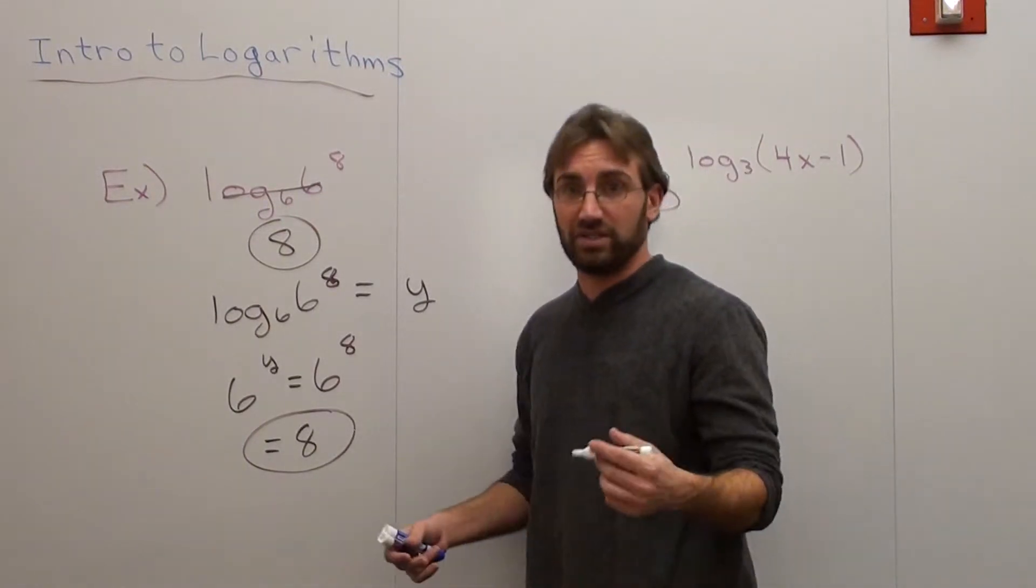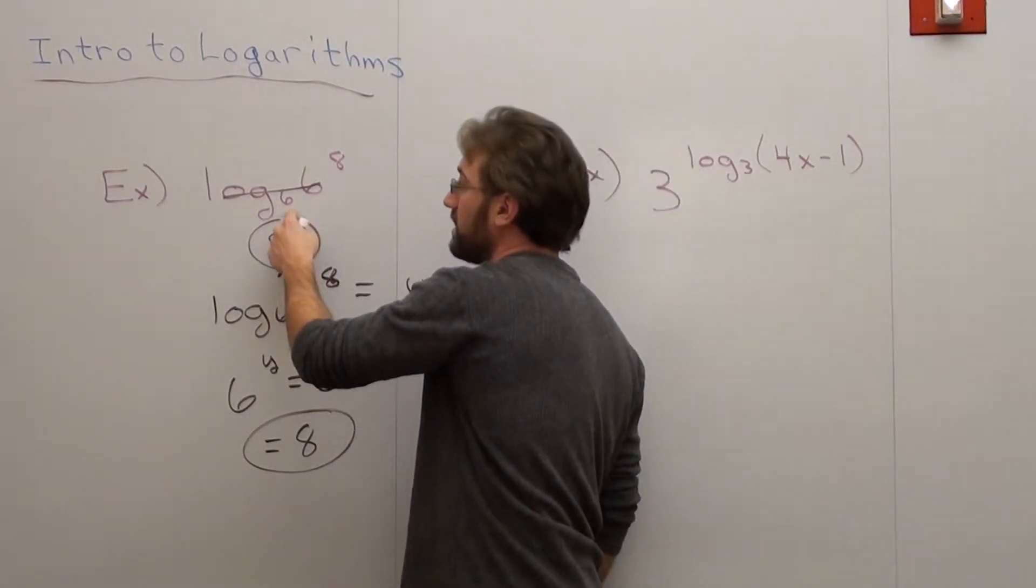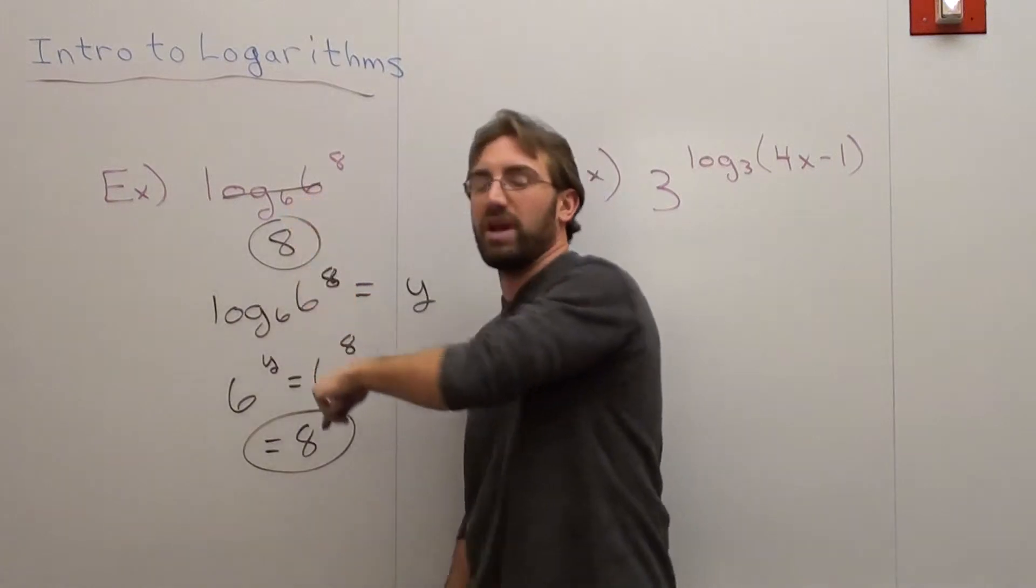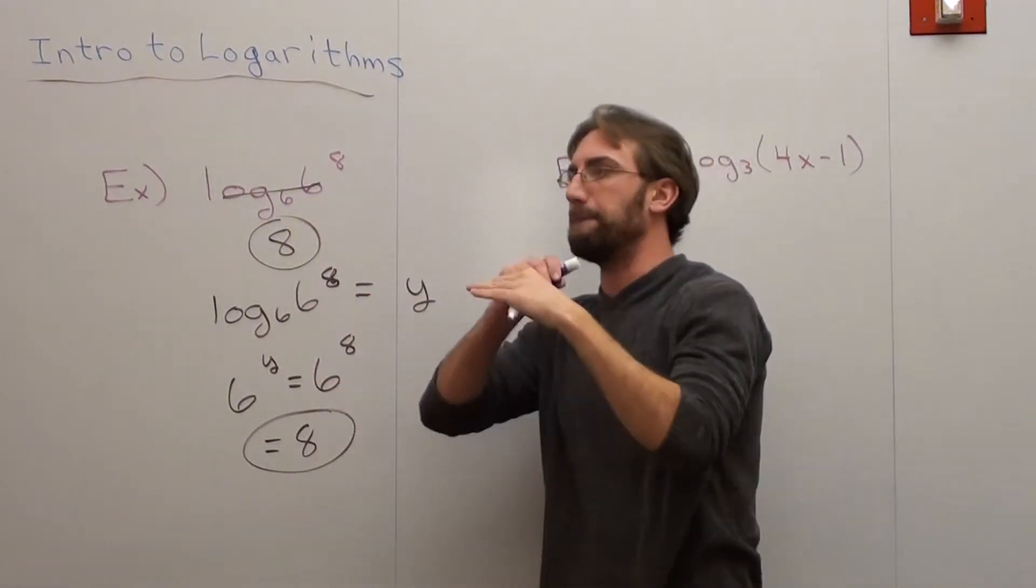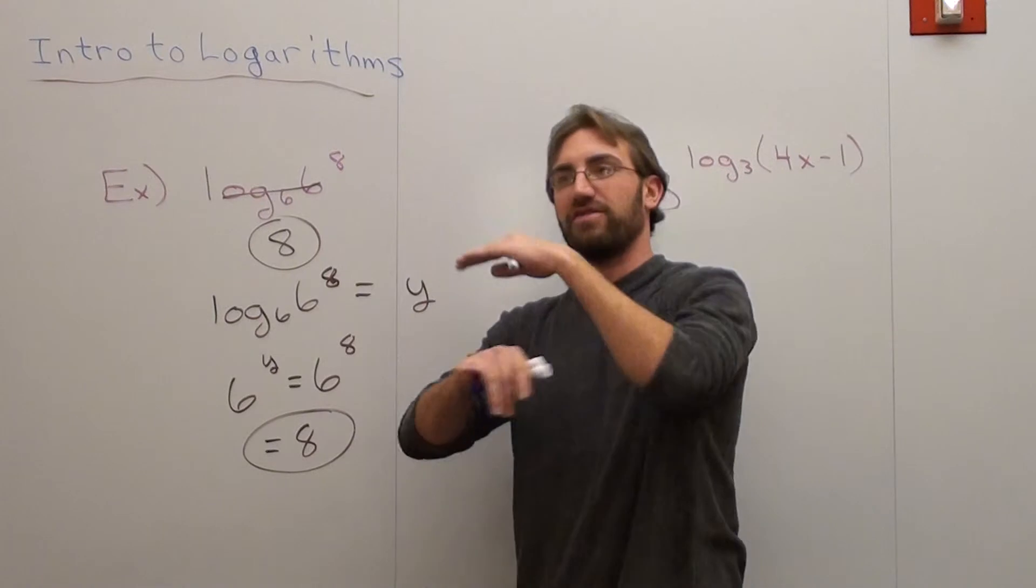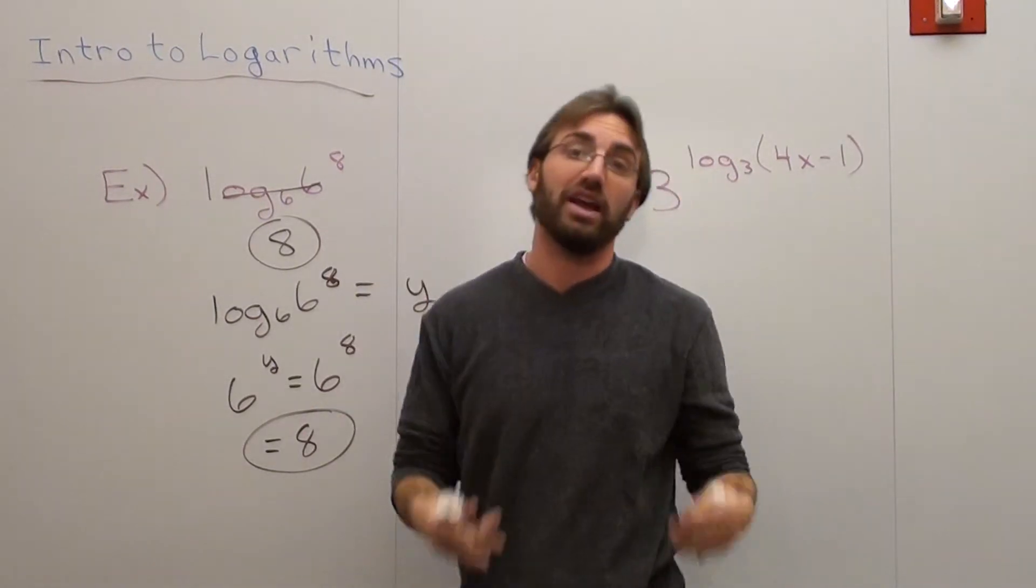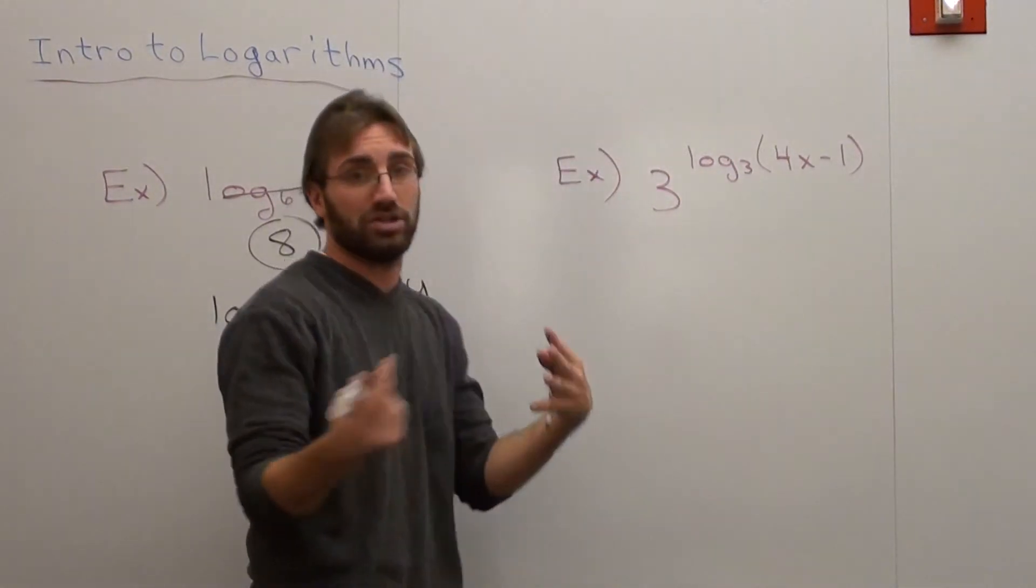But the easier way is very simple. If you see a log of a base, and then you have that same exact base, they cancel out. That's an inverse property. You're left with 8, and you're done.